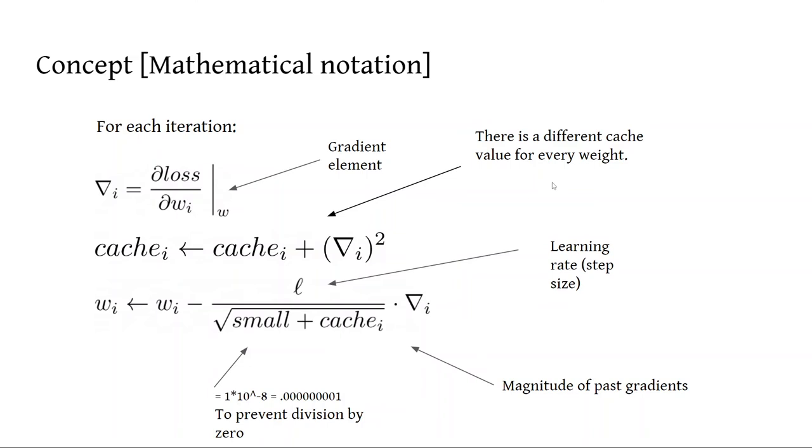So what does that all mean in math terms? Essentially what we're doing is constructing a gradient vector, and we have to do this regardless of what optimizer we're using. Every time we compute gradient descent, we always have to construct a gradient vector. The gradient vector is usually denoted by nabla, where nabla sub i is the partial derivative of the loss function with respect to the i-th parameter, or the i-th weight, and we have to evaluate it at the weight values.